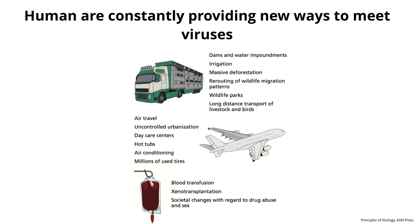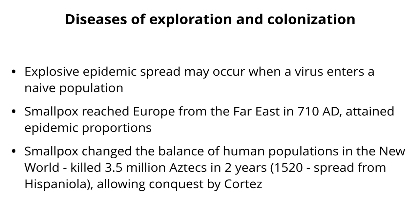Blood transfusions — if we don't know there's a virus in the blood, we transmit it. There have already been examples of people acquiring Zika infection via blood transfusions because we didn't know about it and the virus was already circulating in the blood supply. Xenotransplantation — transplanting animal organs into people. You can get a heart valve from a pig, and someday a whole heart, but pigs have endogenous retroviruses integrated in the genome. Drug abuse and sex spread viruses much more than before.